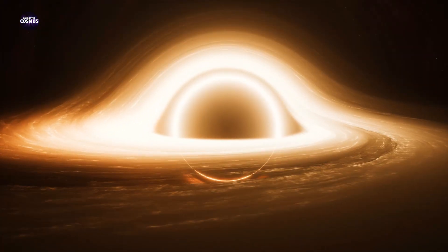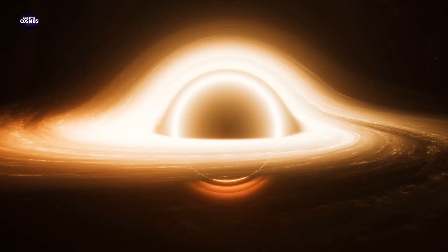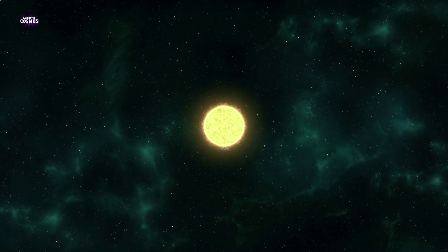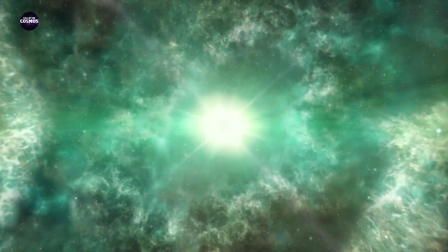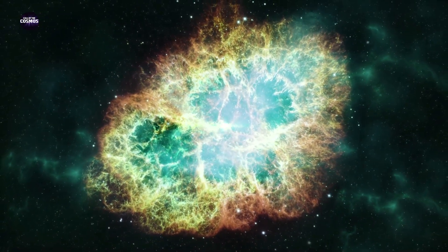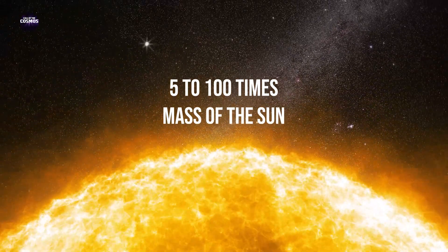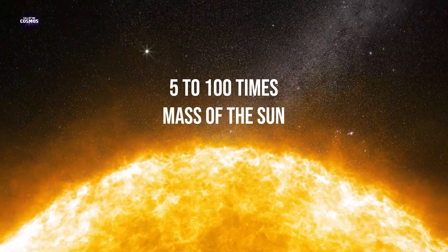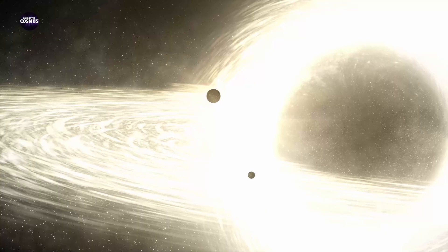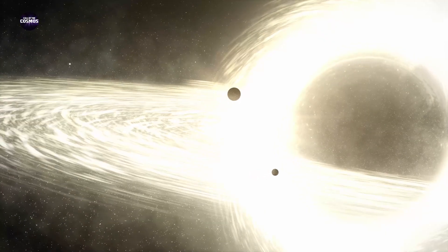Simply put, black holes are the endpoints in the life cycles of massive stars. A stellar-mass black hole forms when a large star runs out of fuel and collapses with a blinding supernova. Black holes appear in a range of sizes, from stellar-mass black holes weighing 5 to 100 times the mass of the Sun, to gigantic ones weighing more than a billion solar masses.